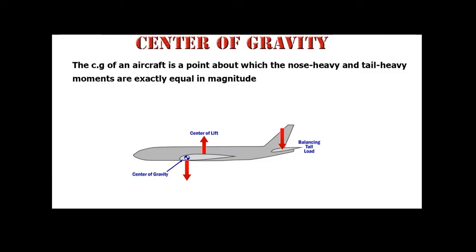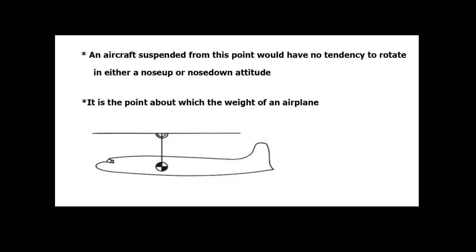Center of Gravity: The CG of an aircraft is a point about which the nose-heavy and tail-heavy moments are exactly equal in magnitude. An aircraft suspended from this point would have no tendency to rotate in either a nose-up or nose-down attitude. It is the point about which the weight of the airplane acts.